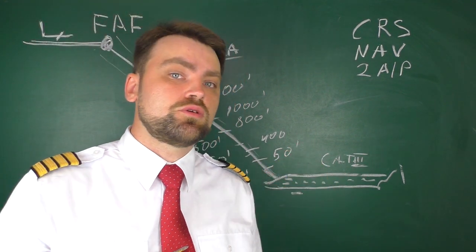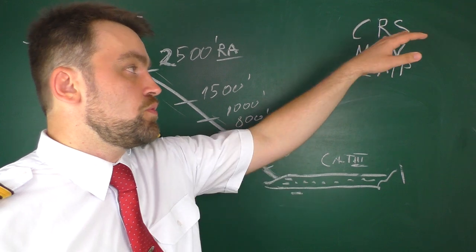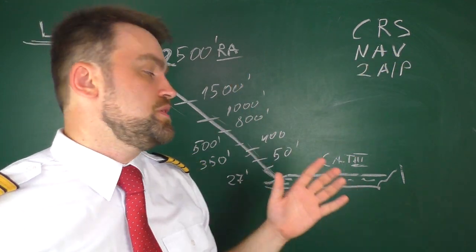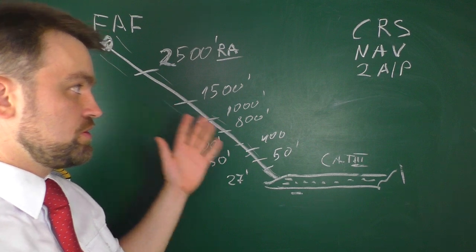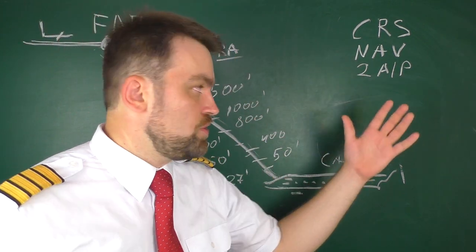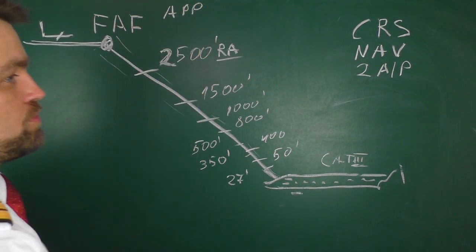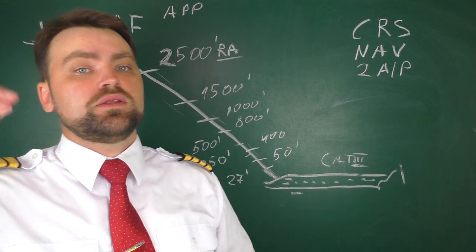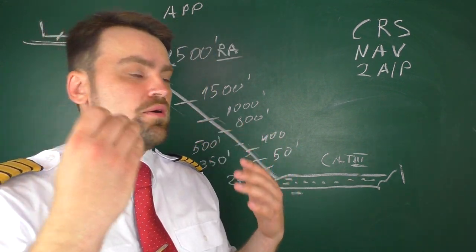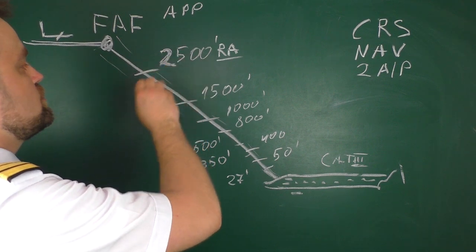All right — what do you need to activate the automatic approach and landing in the cockpit? You need to set the same inbound course on both the captain's and first officer's instruments — the course for the runway. The VHF navigation receivers should be set to the ILS frequency for the particular runway. Two autopilots should be switched on, and then you press the approach button on the MCP. The second autopilot will arm but not become active immediately.